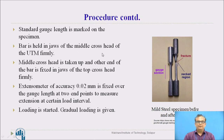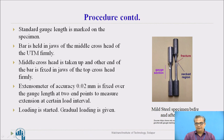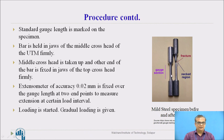The bar is held in the jaws of the middle cross head and upper cross head. First, it is held firmly in the middle cross head of the UTM. Then the middle cross head is taken up and the other end of the bar is fixed in the jaws of the top cross head of the UTM. The specimen is prepared so that its two ends have a larger diameter, while the gauge length part has a reduced diameter, to ensure failure occurs in that region. An extensometer is also fixed over the gauge length to take strain and elongation readings during testing.